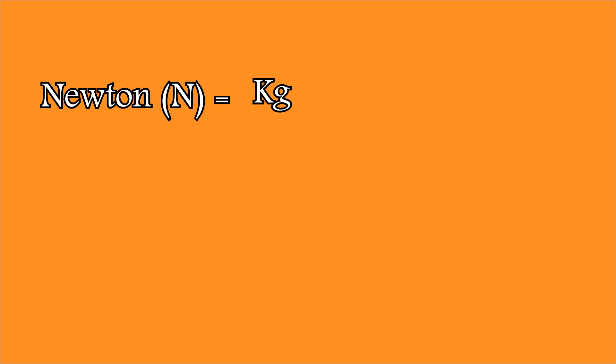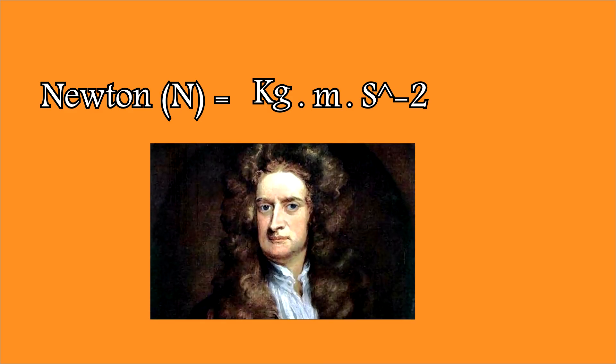The expression for Newton is actually kilograms times meters times seconds to the negative two. I know a lot of people complain about why we use these kinds of things. Back in school people would say, why don't you just tell me in English what that means? Well, here it is: it's the amount of force it takes to accelerate one kilogram of mass at the rate of one meter per second squared in the same direction of the applied force.